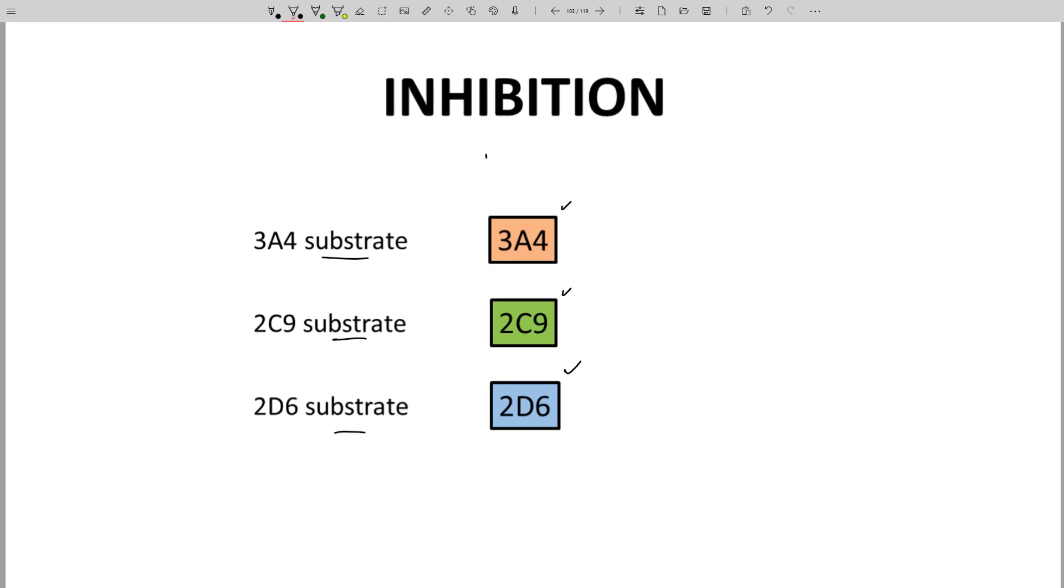If addition of a lead slows the rate of conversion of one of the substrates, then you know that the lead is acting as an inhibitor on the corresponding CYP isoform. Again, this is just a proof-of-concept diagram.